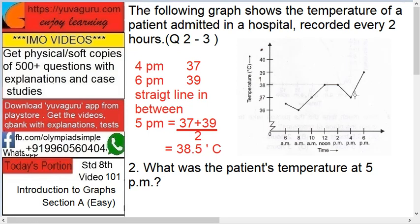In between, it's a straight line. Always remember it should be a straight line. At your level it's only a straight line—there can be curvilinear curves also, but that's not for you. So it's a straight line, and we want the value for 5 p.m., which is in the middle.